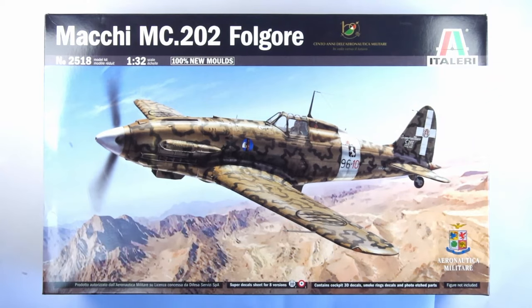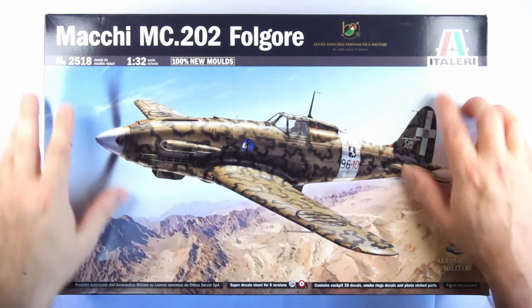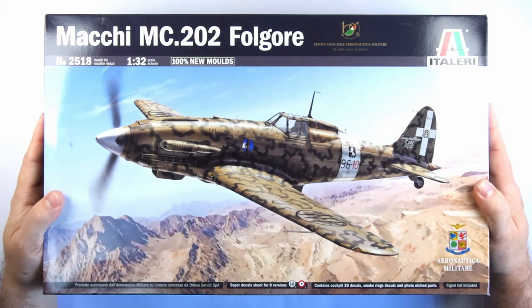So what's the initial impression of the Italeri 1:32 scale MC.202 Folgore? My initial thoughts can't help but compare it to the Airfix 1:24 scale Spitfire released last year. This is a similar price, and for that you're getting about half of the parts, as well as a smaller scale rendition of a similar aircraft.